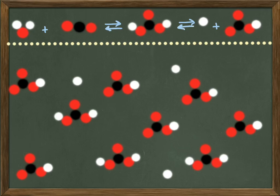And this is how buffers work. They maintain a pH within a certain range by releasing hydrogen ions or absorbing hydrogen ions accordingly.